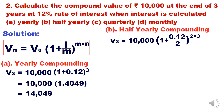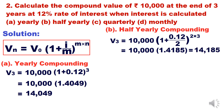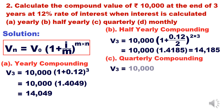For half-yearly compounding, m = 2 (frequency is twice per year), so the formula becomes: V3 = 10,000 × (1 + 0.06)^6. Simplifying, the compounding factor is 1.4185, giving a final answer of ₹14,185.